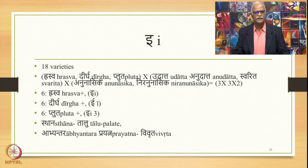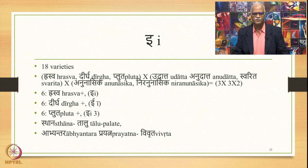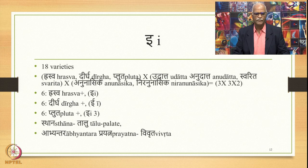Let us go to vowel E. E also, like A, has 18 varieties — 3 of length (raswa, dirgha, pluta), multiplied by 3 accents (udatta, anudatta, swarita), multiplied by anunasika and niranunasika. So 3 multiplied by 3 multiplied by 2 gives 18. There are 6 varieties of raswa E, 6 of dirgha E, and 6 of pluta E. The place of articulation for all 18 varieties is talu (palate), and the abhyantara prayatna for all 18 varieties is vivruta.